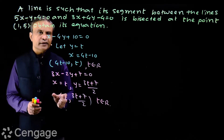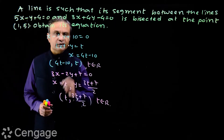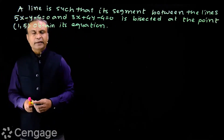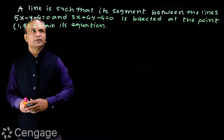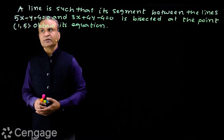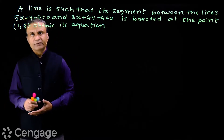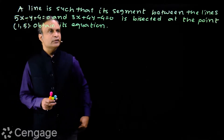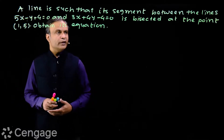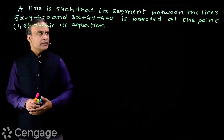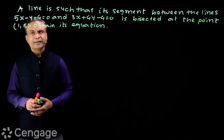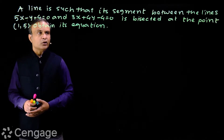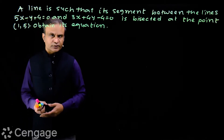Now let us see how this provides a shortcut method to solve equations. Here we have: a line is such that its segment between the lines 5x minus y plus 4 equal to 0 and 3x plus 4y minus 4 equal to 0 is bisected at the point (1, 5). We need to obtain its equation.